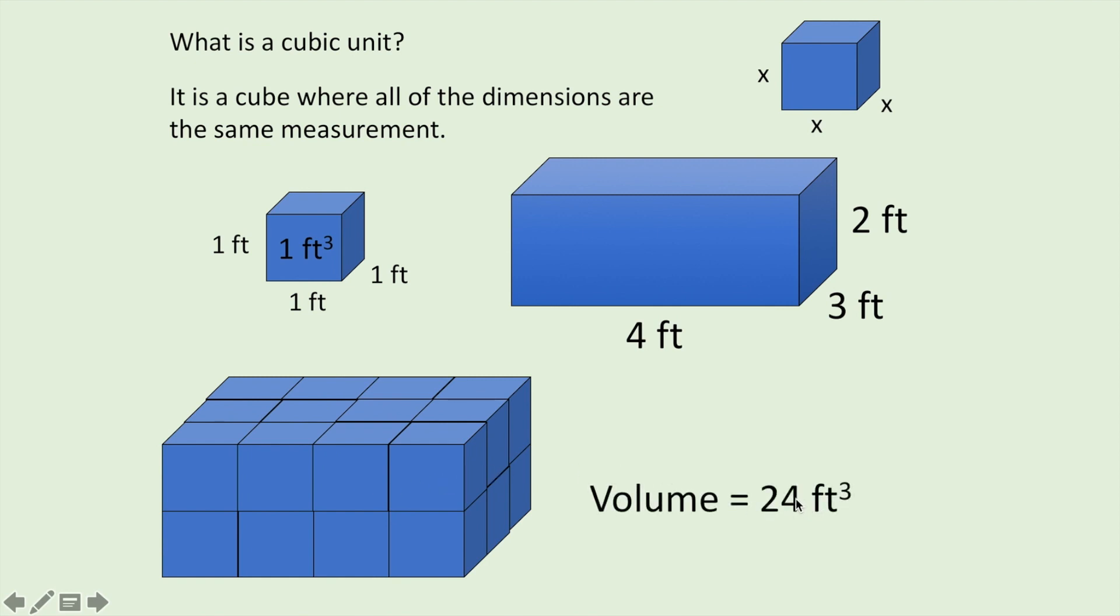So how many cubes fit in there? Twenty-four cubic feet. Now they taught you a formula back in school. Length times width times height for volume. That only works on a rectangular prism like this. So that will tell us four times three times two. That tells us how many cubes go on the bottom row, twelve, and then how many rows high? Two high, so we've got twenty-four cubic feet.